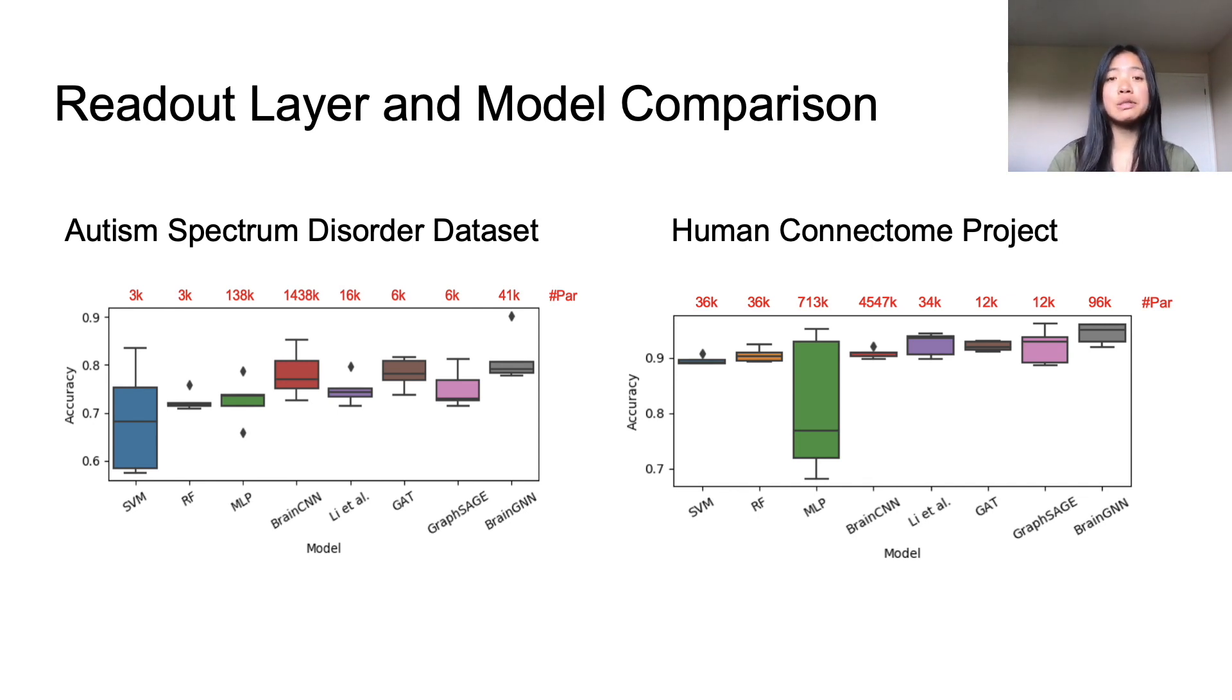The BrainGNN is also able to operate on a smaller dataset compared to many of the other models. The red values at the top indicate the number of trainable parameters where the more parameters there are, the larger the dataset must be. Due to the complexity of fMRI images, you usually need a large number of parameters in order to perform accurately. However, the BrainGNN has 41,000 parameters for the ASD dataset and 96,000 for the HCP dataset. Although that's still more than some of the other models, the BrainGNN has managed to reduce the number of parameters compared to models such as the MLP or BrainCNN without sacrificing on performance accuracy.